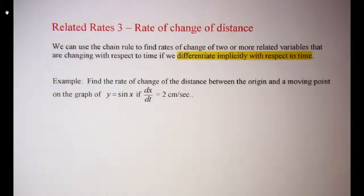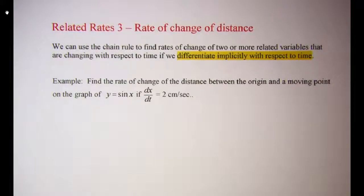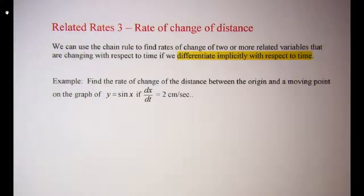In this video we'll be looking at related rates, specifically rate of change of distance. We can use the chain rule to find rates of change of two or more related variables that are changing with respect to time if we differentiate implicitly with respect to time. The example we'll be working with is: find the rate of change of the distance between the origin and the moving point on the graph of y equals sine x, if dx/dt is equal to 2 centimeters per second.